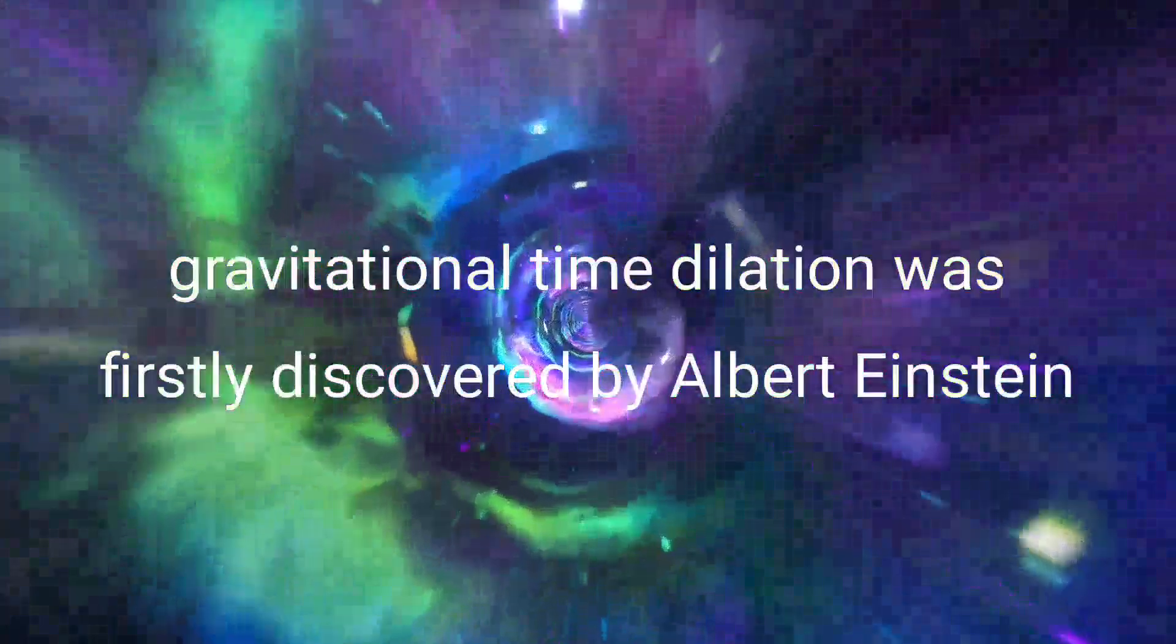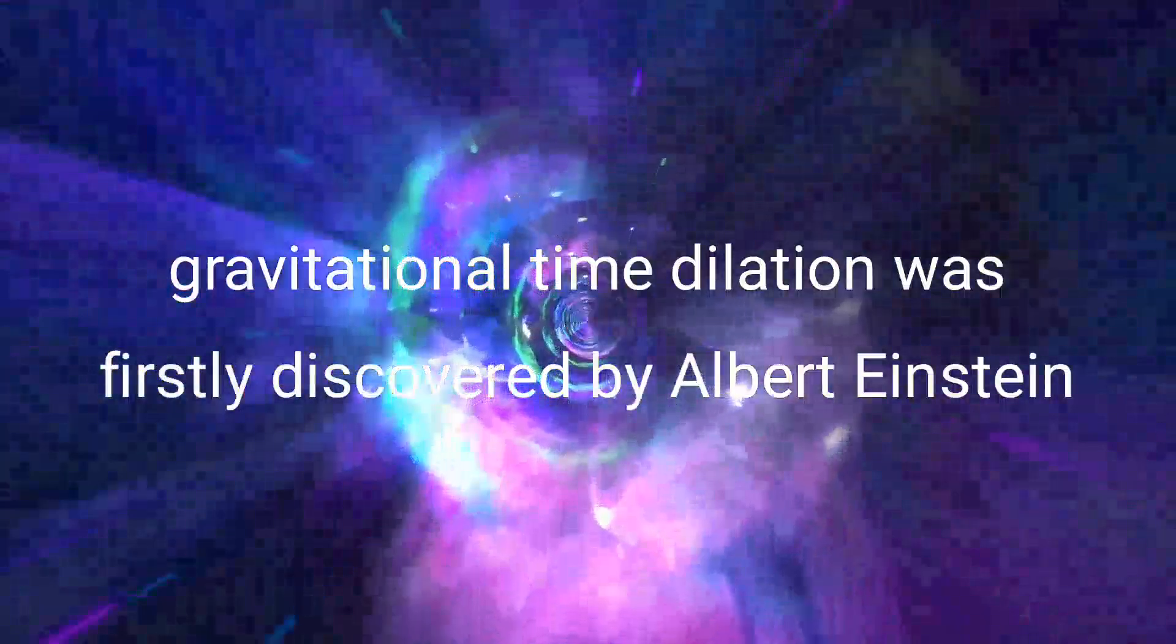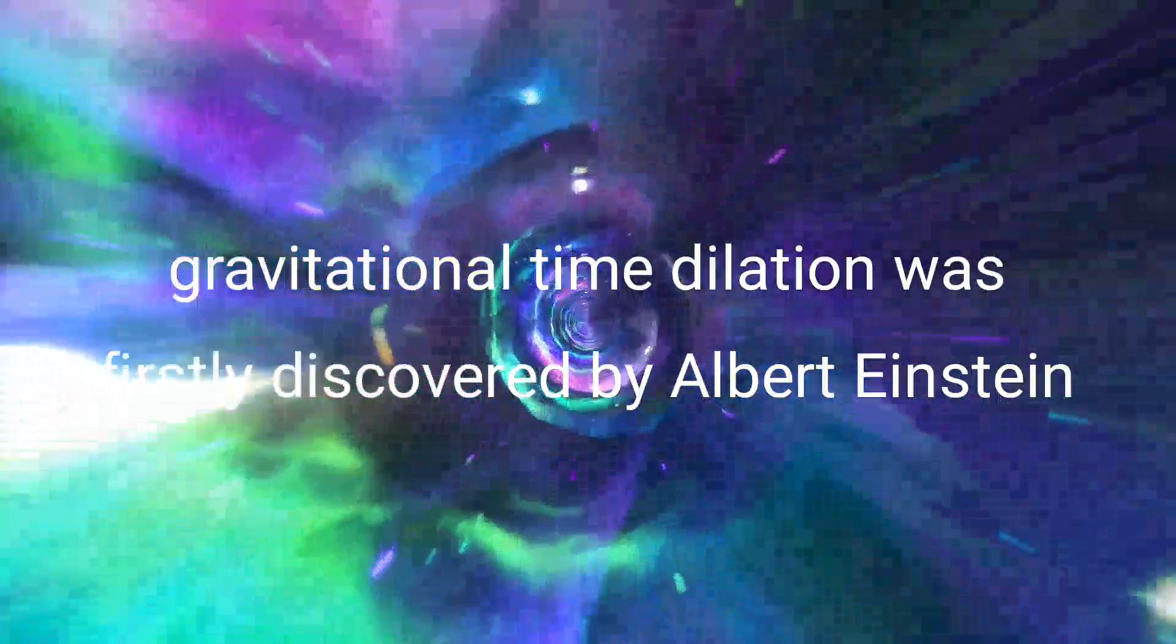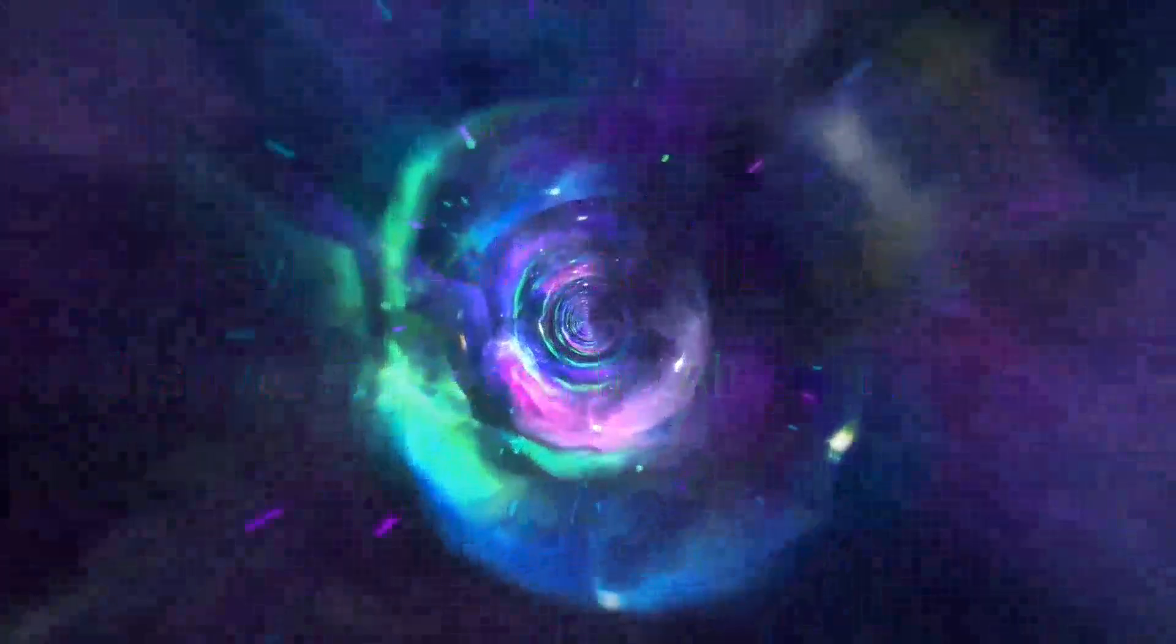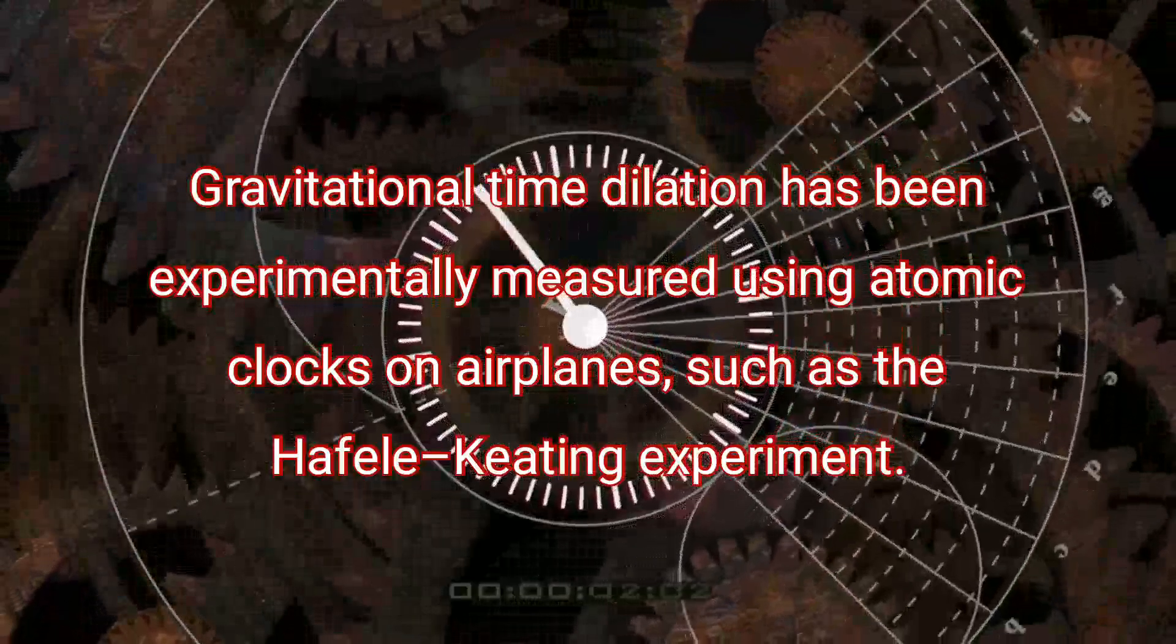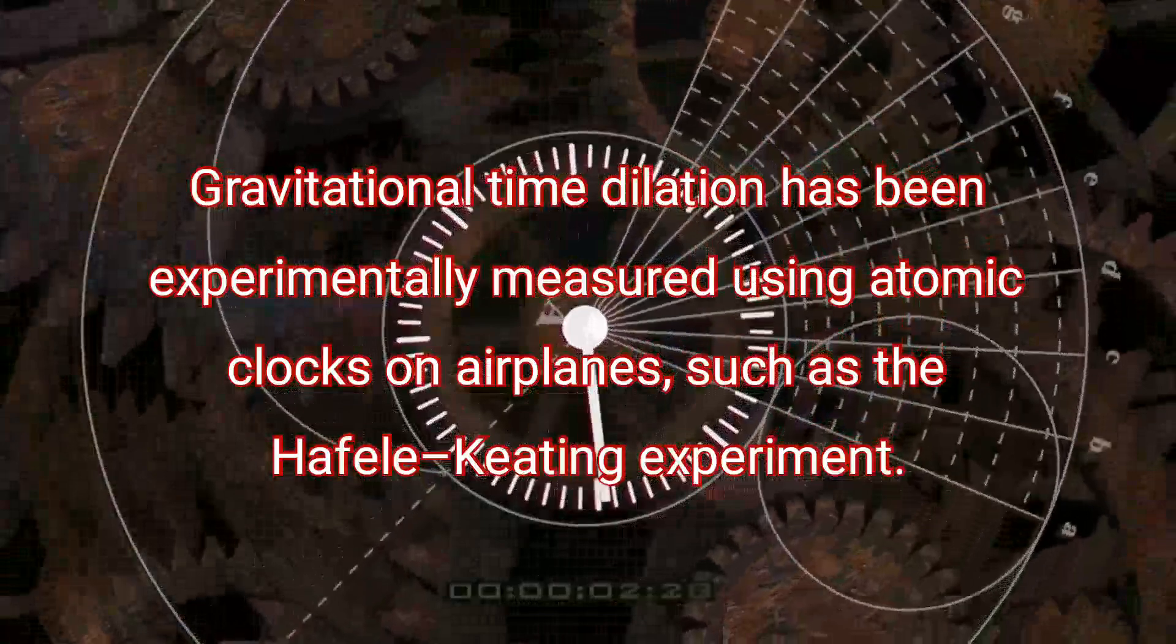This is known as gravitational time dilation. Gravitational time dilation was firstly discovered by Albert Einstein in 1907 and proved by using atomic clocks on airplanes,